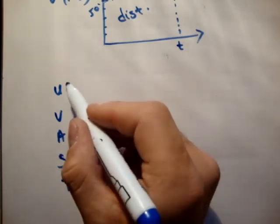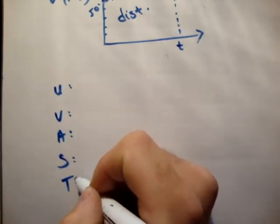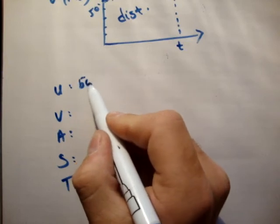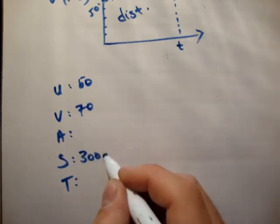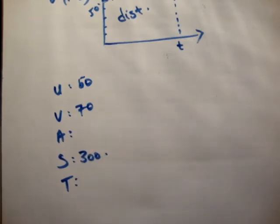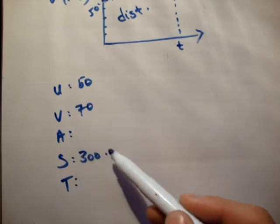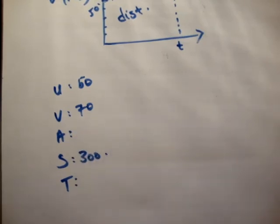We know that initial velocity u is 50, final velocity v is 70, the acceleration a we don't know. But we're given that the distance s is 300 meters. And we don't know the time t as well. So what do we do? v equals u plus at. If we use that formula, we have two unknowns. That's not really good.